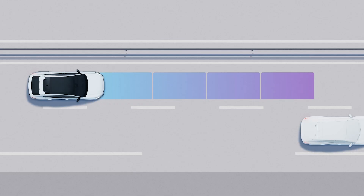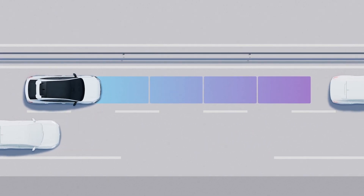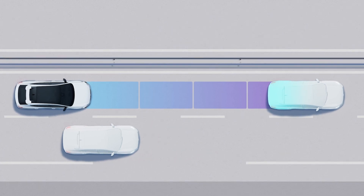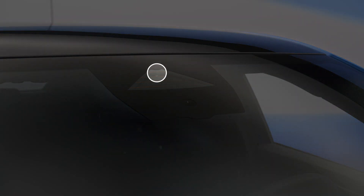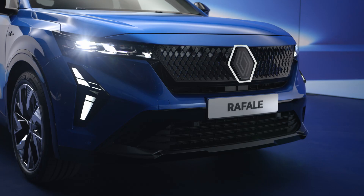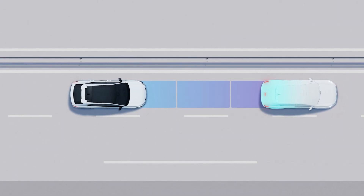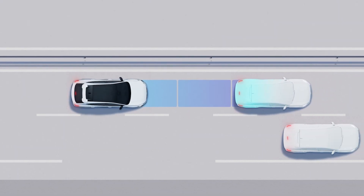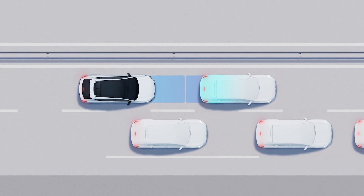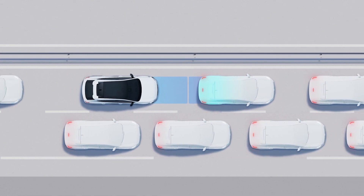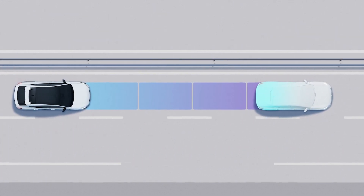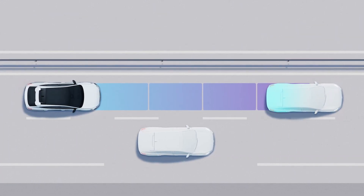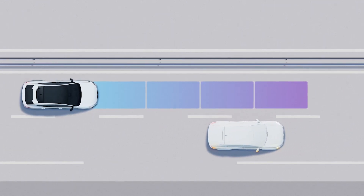Stop and Go Adaptive Cruise Control uses data from the camera on the windscreen and the radar sensor in the front bumper to keep to the speed you want while maintaining the correct following distance from the vehicle in front. If you get too close to the vehicle in front, your vehicle will slow right down to a complete stop if need be, without you having to brake. When the following distance is sufficient again, your vehicle will return to your set cruising speed.